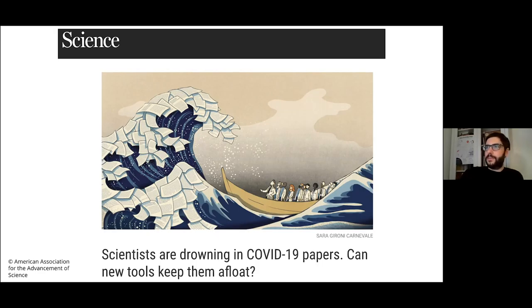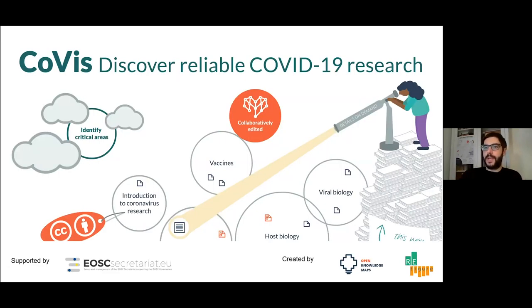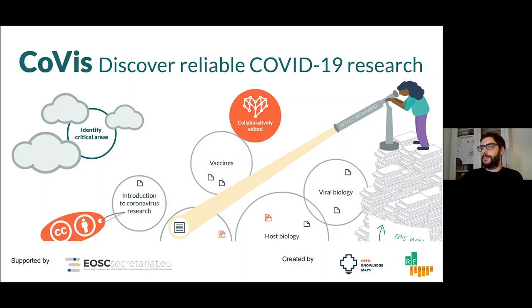For this especially, but also for everyone else, we have developed Coviz, which is a visual tool that gives you an overview of the most reliable research on COVID-19. We want to put you on top of that pile of paper and really give you a bird's eye view of the field. We want to help you identify critical areas, but then also dive into them and really find individual papers that you might want to read. The project was developed together with our partners from ReFigure.